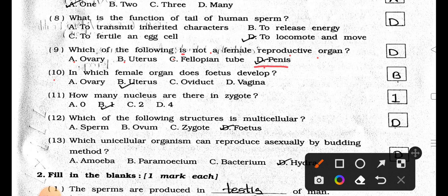Number 10. In which female organ does the fetus develop? A. Ovary, B. Uterus, C. Oviduct, and D. Vagina. Answer is Option B, Uterus.